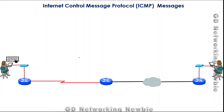In this video we are going to discuss Internet Control Message Protocol, that is ICMP, and specifically ICMP messages. We know that IP protocol is used to send data from one point to another, and IP is basically a best-effort delivery protocol, meaning it sends the data to the destination but does not guarantee that data is actually delivered.